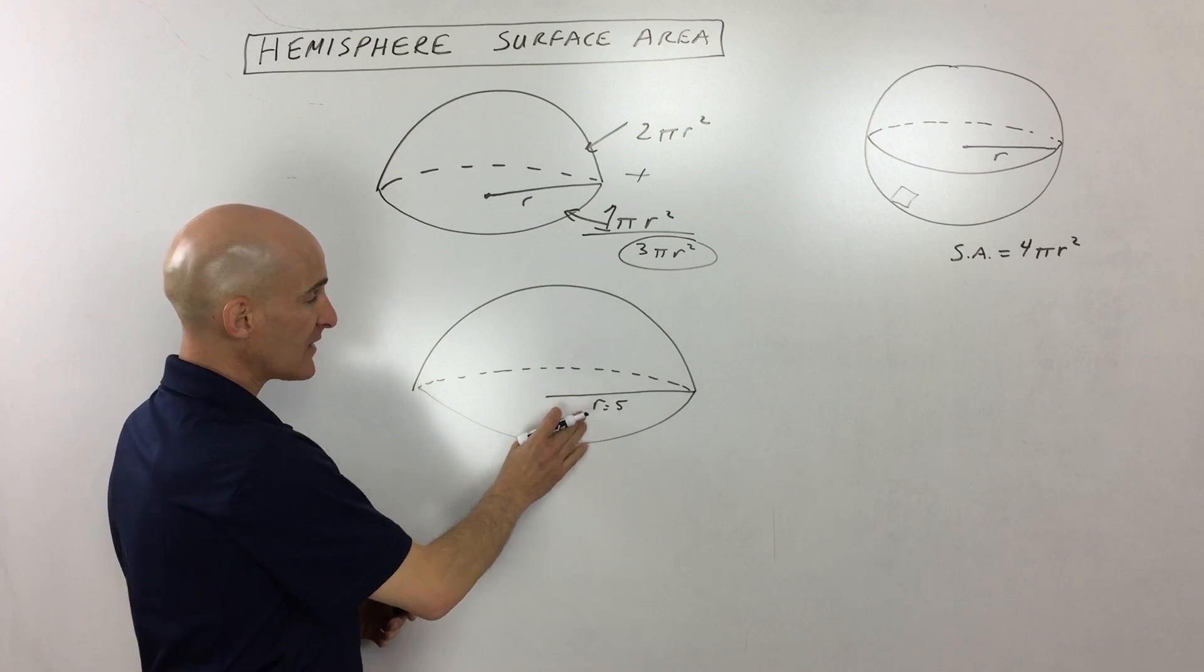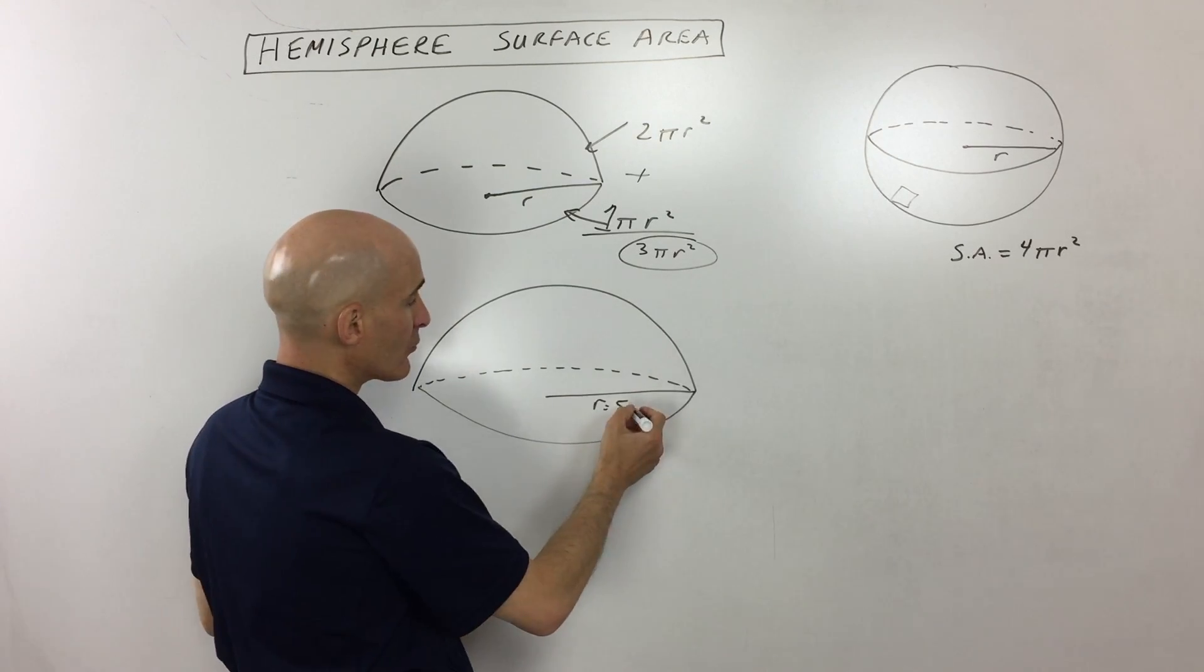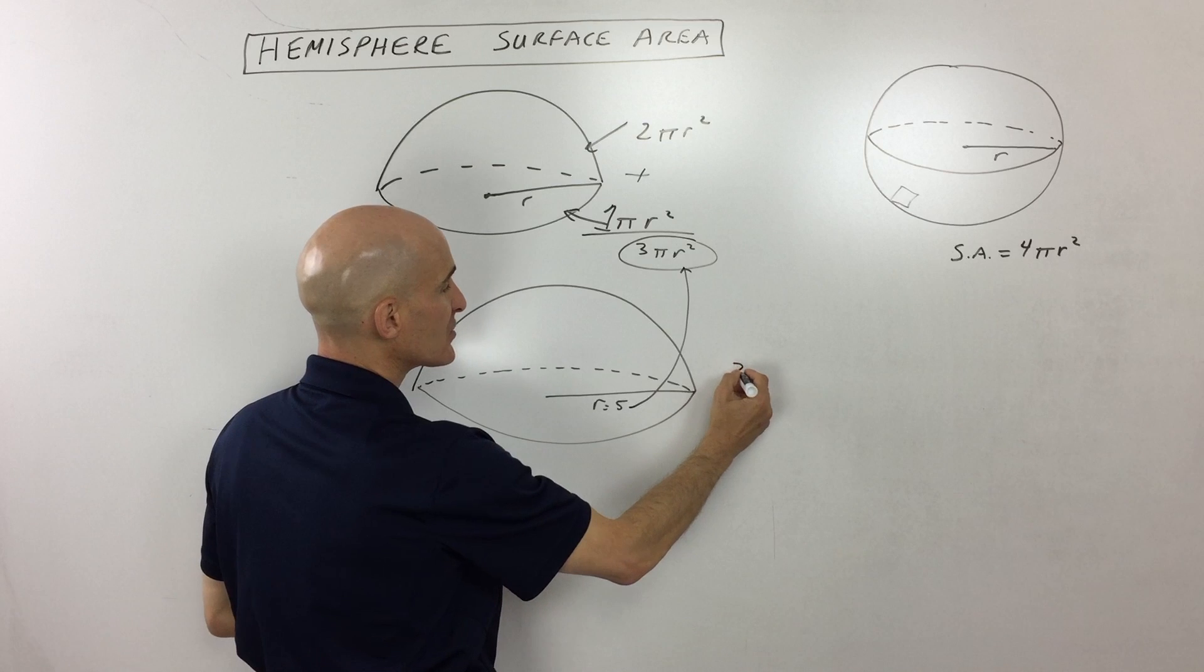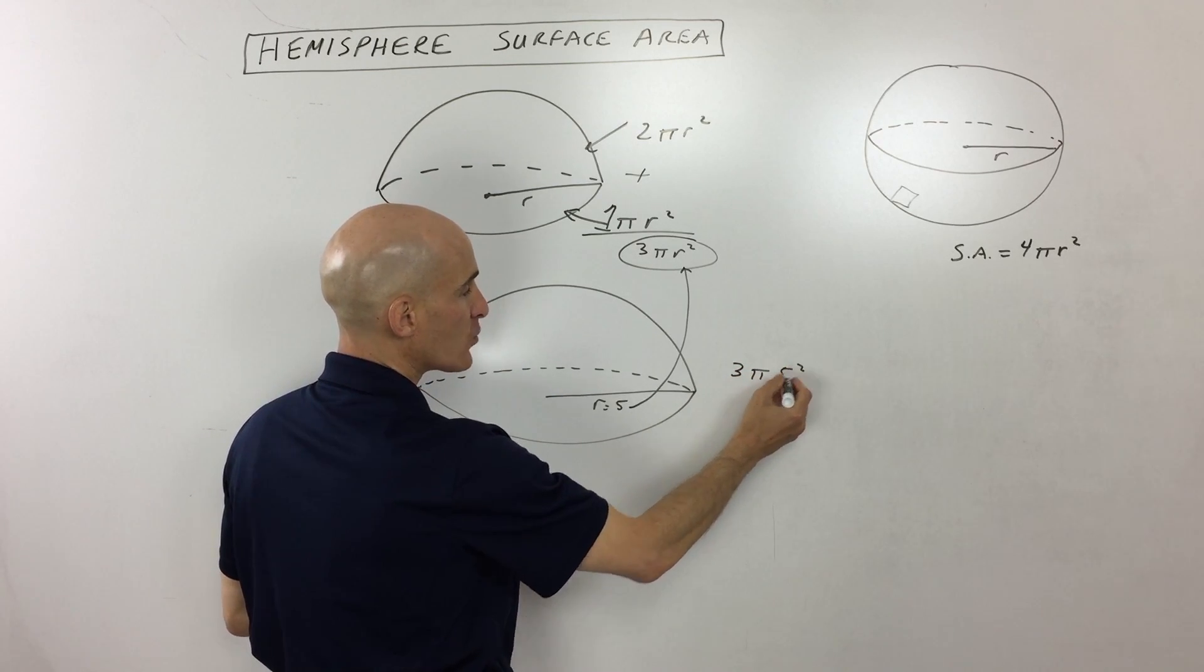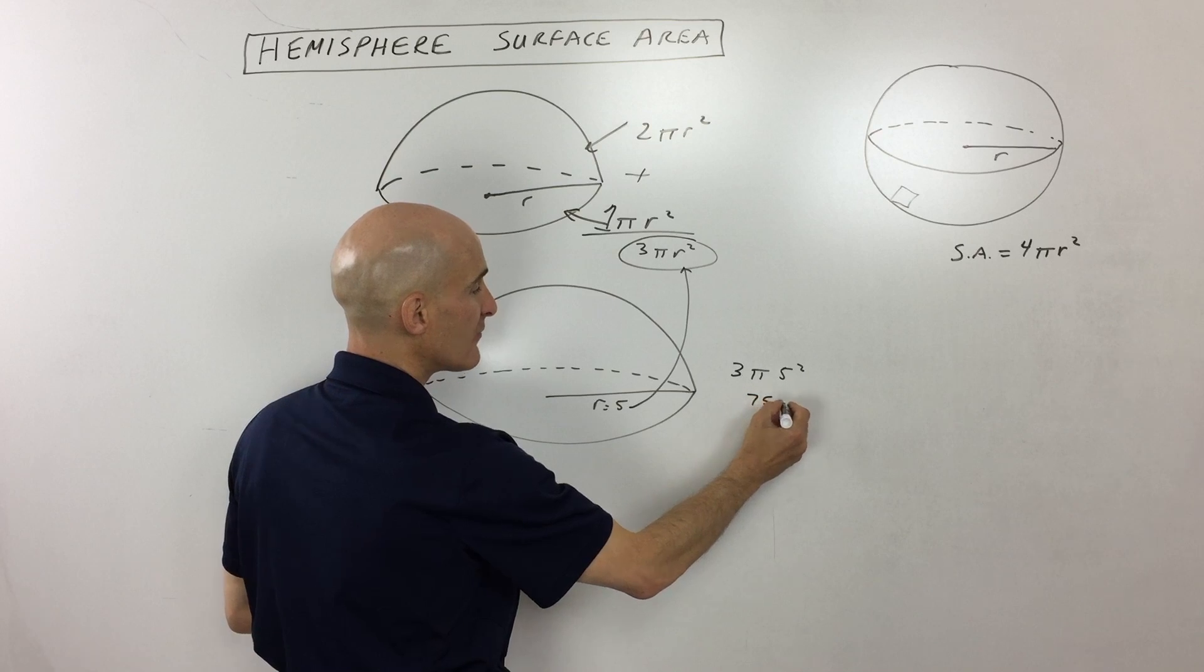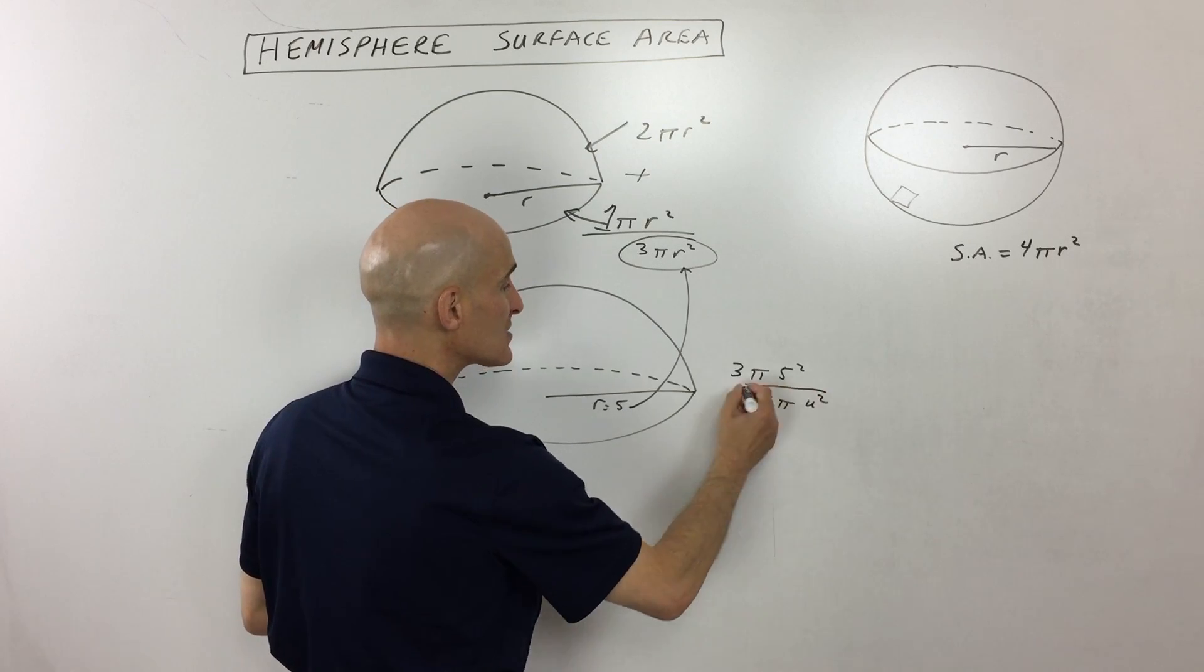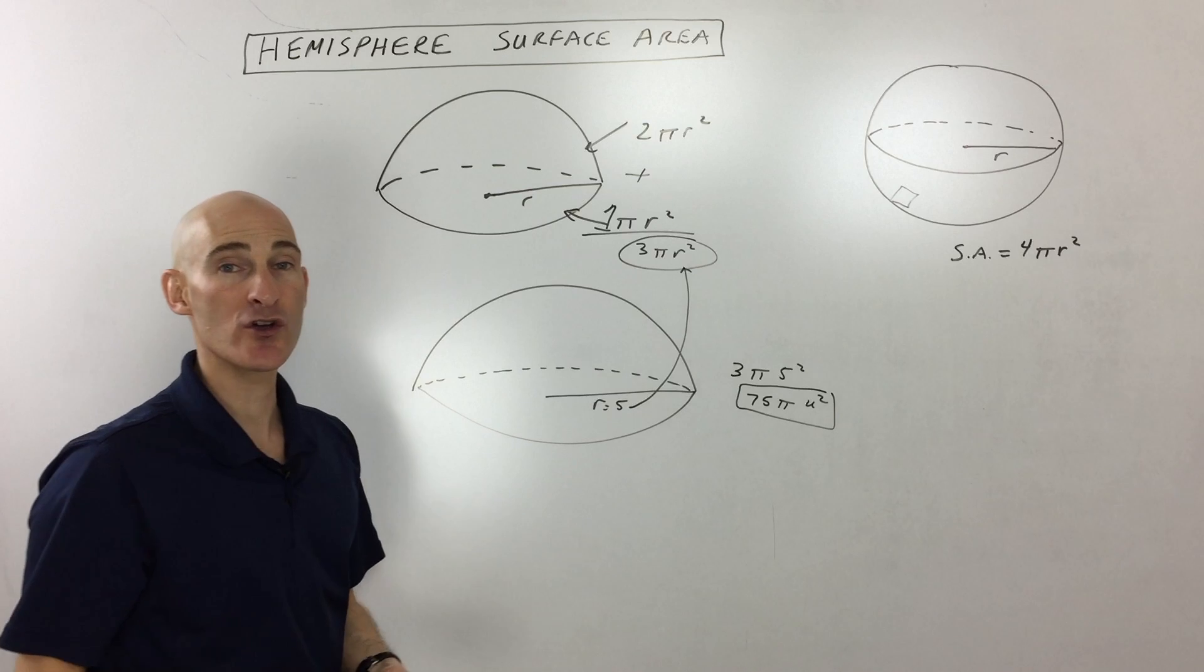So a quick example: if they give you the radius as 5, real simple, you just put that in for the radius. It's going to be 3 times π times 5 squared. That's 25 times 3, which is 75π square units.